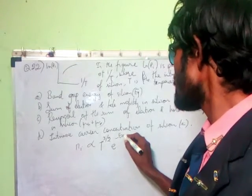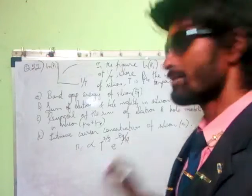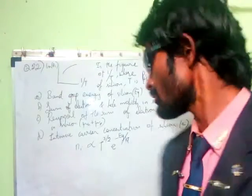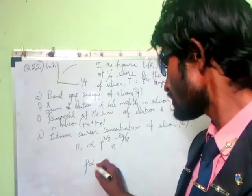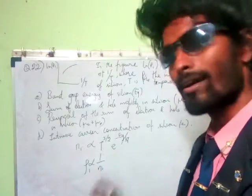The rho value is inversely proportional to 1/n_i.